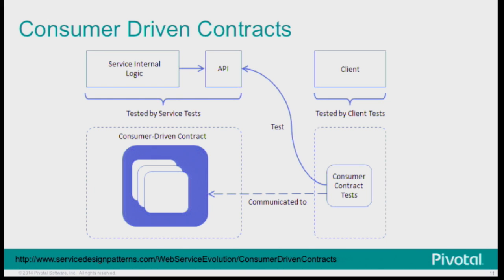So this is the basic idea behind the pattern. You can still write your own document as a provider describing your API and the operations you expose — there's nothing wrong with that. But it's incredibly useful to have those consumer tests. This is why it's probably not useful if you're publishing something like the Google Maps API to the universe, but if you're inside an enterprise or company with a limited number of consumers, this is quite practical.